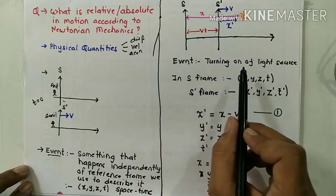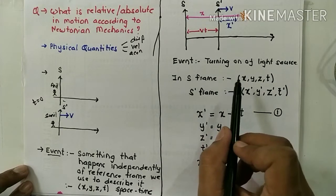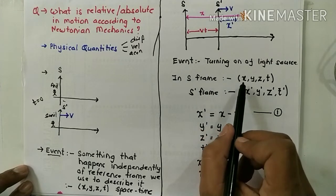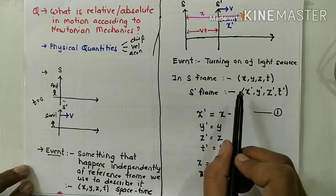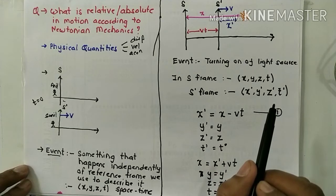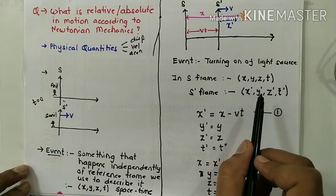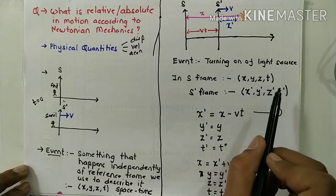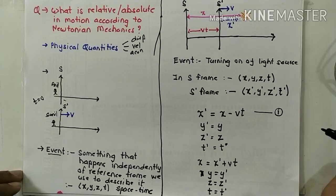The event is the turning on of a light source. According to S, the event has happened at x, y, z, and t. And according to S-dash, the event has happened at x-dash, y-dash, z-dash, and t. Now, what is the relation between x and x-dash, y and y-dash, z and z-dash, and t and t-dash? This relation between coordinates from one reference frame to another reference frame is what is called transformation.